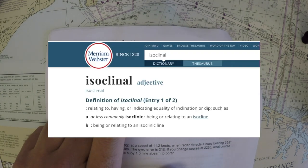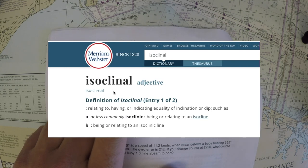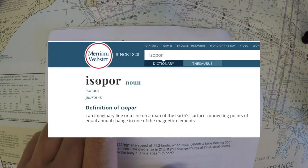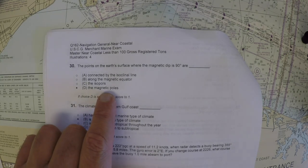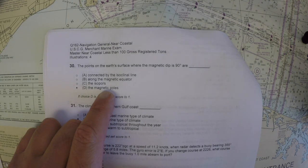But looking at isoclinal lines, you know, we'll look up that definition here. You can see the image. Isoporic lines, you can see that definition. Those don't quite fit. The magnetic equator doesn't quite fit either. So the magnetic poles is where our mind should go for the answer.